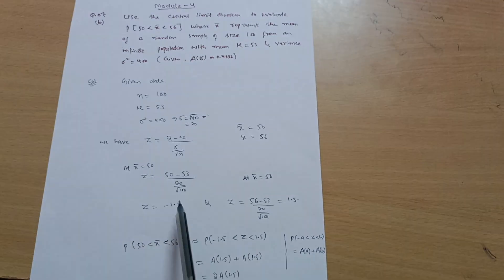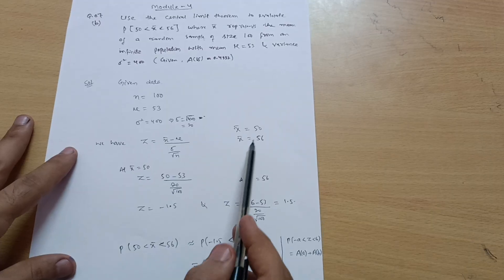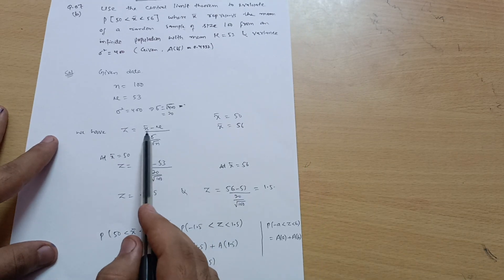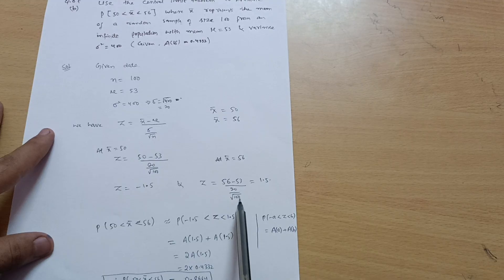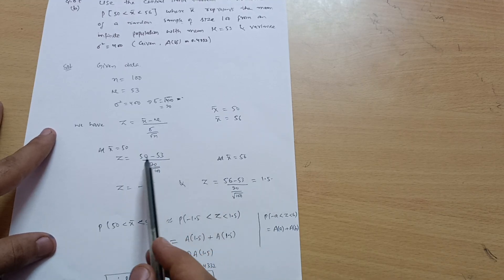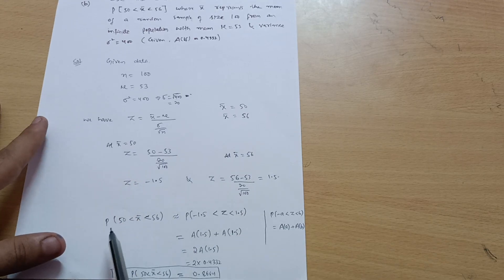At X̄ = 56, just put down the 56 value instead of X̄. So Z = (56 - 53)/(20/√100) which equals 1.5. So these are the two values at different X̄s.